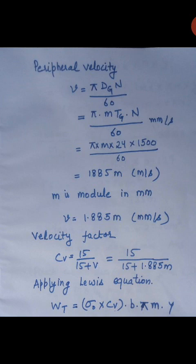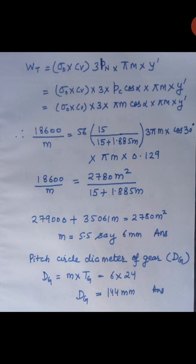Now we will calculate the velocity factor. It is given by the equation Cv equal to 15 upon 15 plus v, which is equal to 15 upon 15 plus 1.885 m. Now we will apply the Lewis equation: Wt equal to sigma naught into Cv, multiplied by b, multiplied by pi m, multiplied by y dash. Note that the face width b is three times the normal pitch.